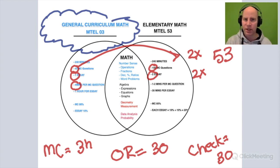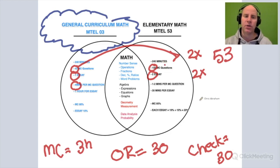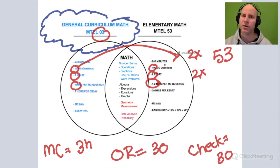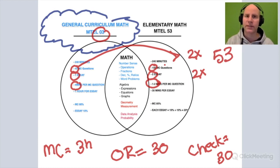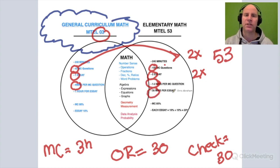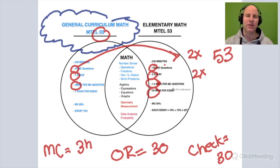With the 53, it's much tighter. You have to do the multiple choice in less than two minutes per question, compared to three to four minutes on the 03. Some questions on the 53 you need to solve in a minute. You're moving twice as fast and doing twice as much. The open responses are also doubled, so you have to move twice as fast there as well.